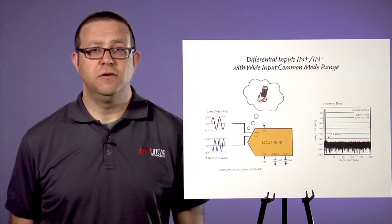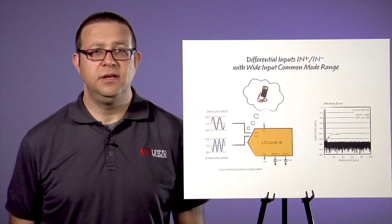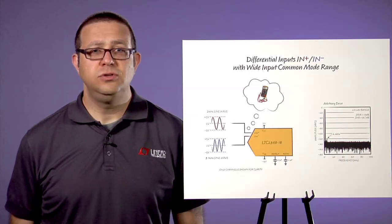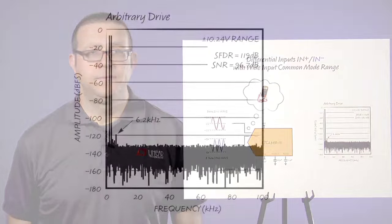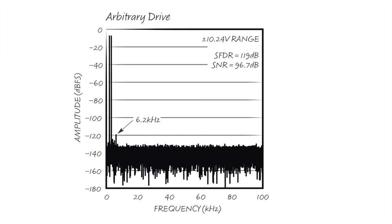An ideal differential converter with no common mode sensitivity will digitize the signals as two spectral tones, one at each sine wave frequency. This Fast Fourier Transform or FFT plot demonstrates the LTC 2348-18 response with 119 dB of spurious free dynamic range limited by the converter's second harmonic distortion response to the 3.1 kHz sine wave.